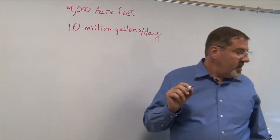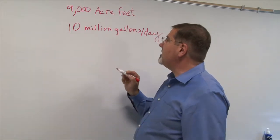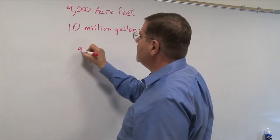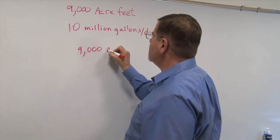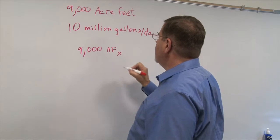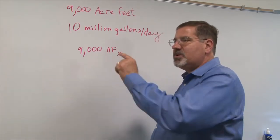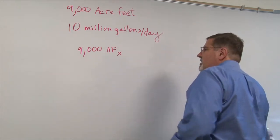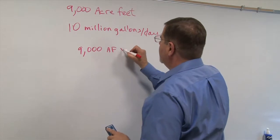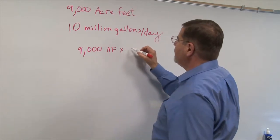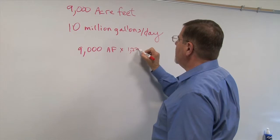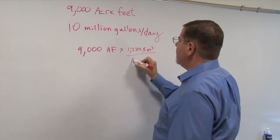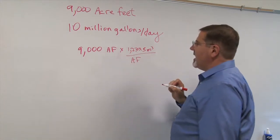So the first thing we do is we're going to convert this acre feet into gallons. And so that's fairly straightforward. We simply take 9,000, and I'm going to use the shorthand for acre feet, and we're going to multiply this. I'm going to take it two steps just so we get a better feel for conversions. And so what I'm going to do is multiply acre feet times 1,233.5 cubic meters per acre foot.